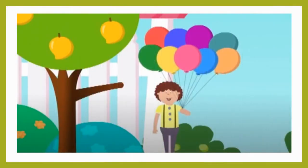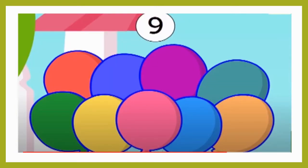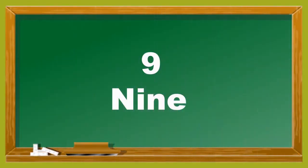Hey, I can see the balloon seller near the gate. He has so many colorful balloons. Come, let us count them — 1, 2, 3, 4, 5, 6, 7, 8, 9. There are 9 balloons. N, I, N, E — 9.